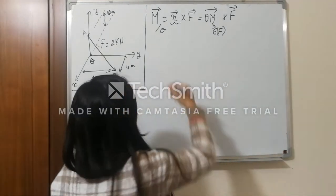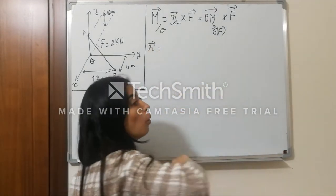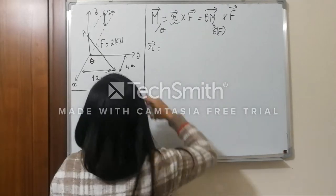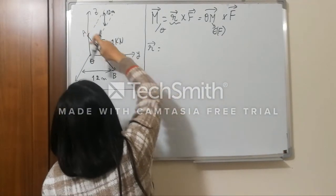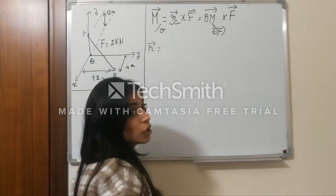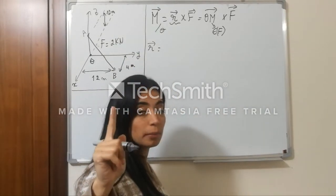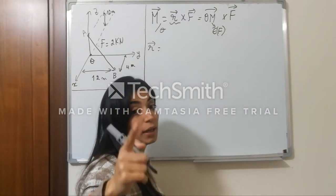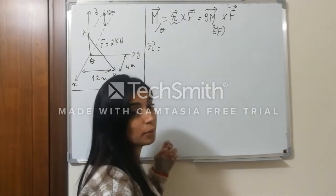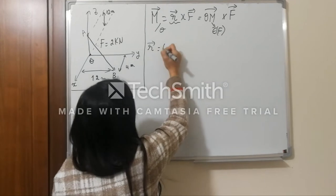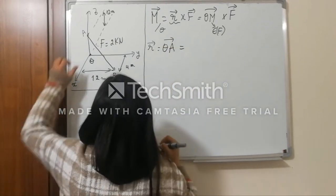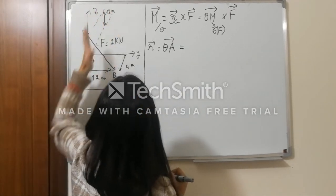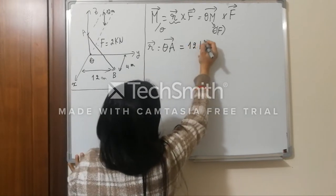Let's start by finding r. We said that r should be from O to M, where M is a point on the line of action of the force. I can see that I have two points on F — I can either take A or B. I will take A and you should do B at home and confirm the results; you should have the same results. So r is equal to OA. OA is equal to 12k because it is in the positive direction of z.